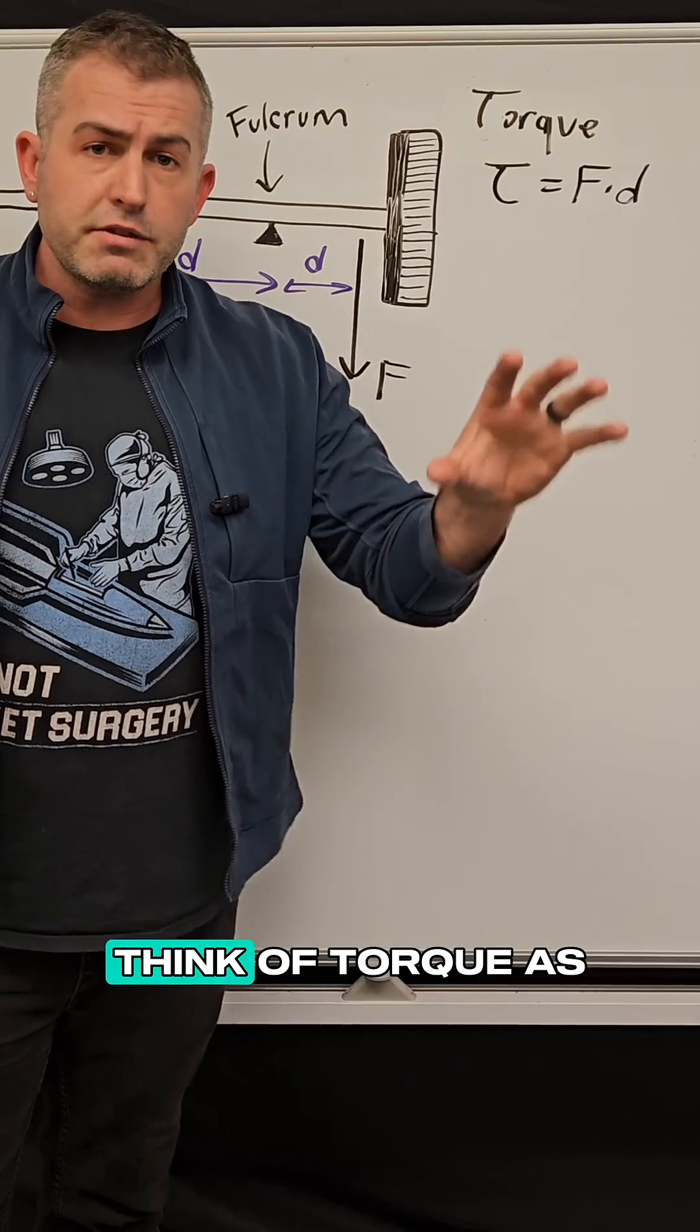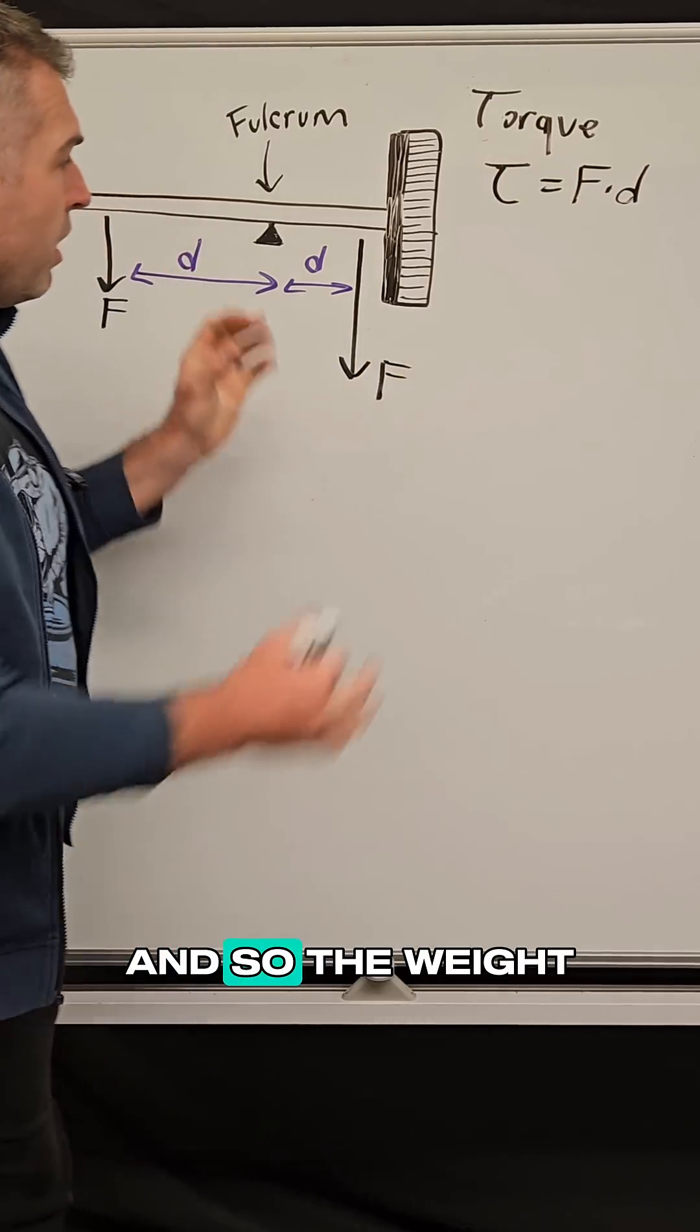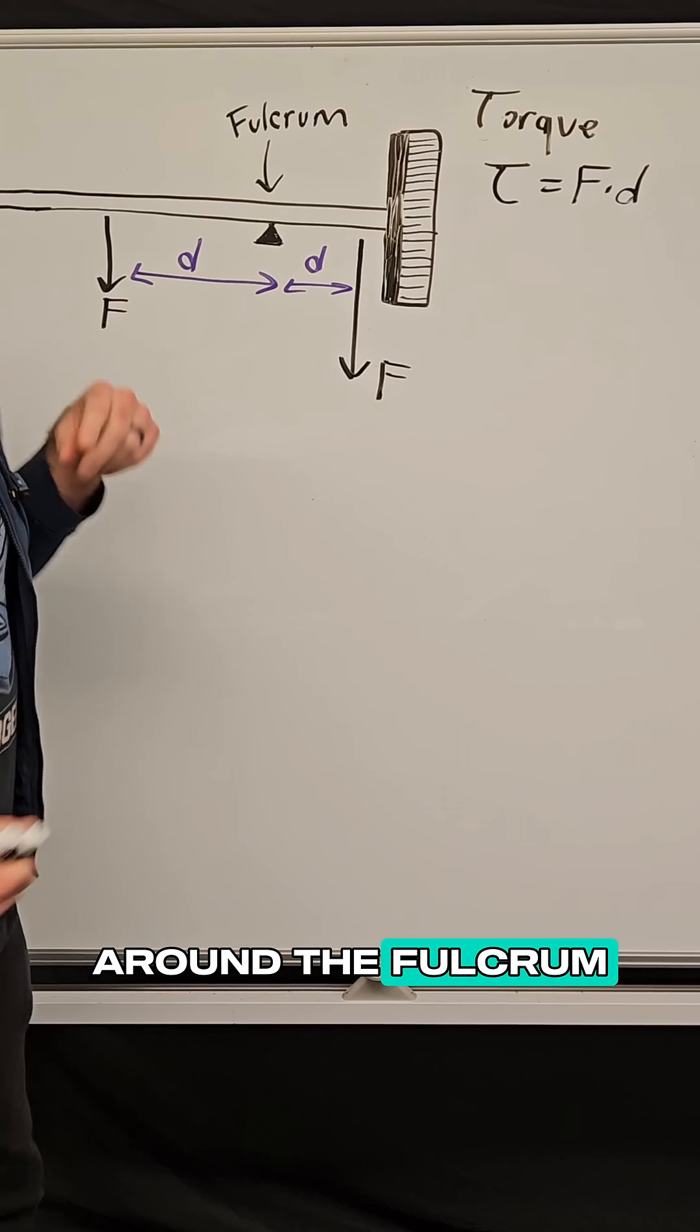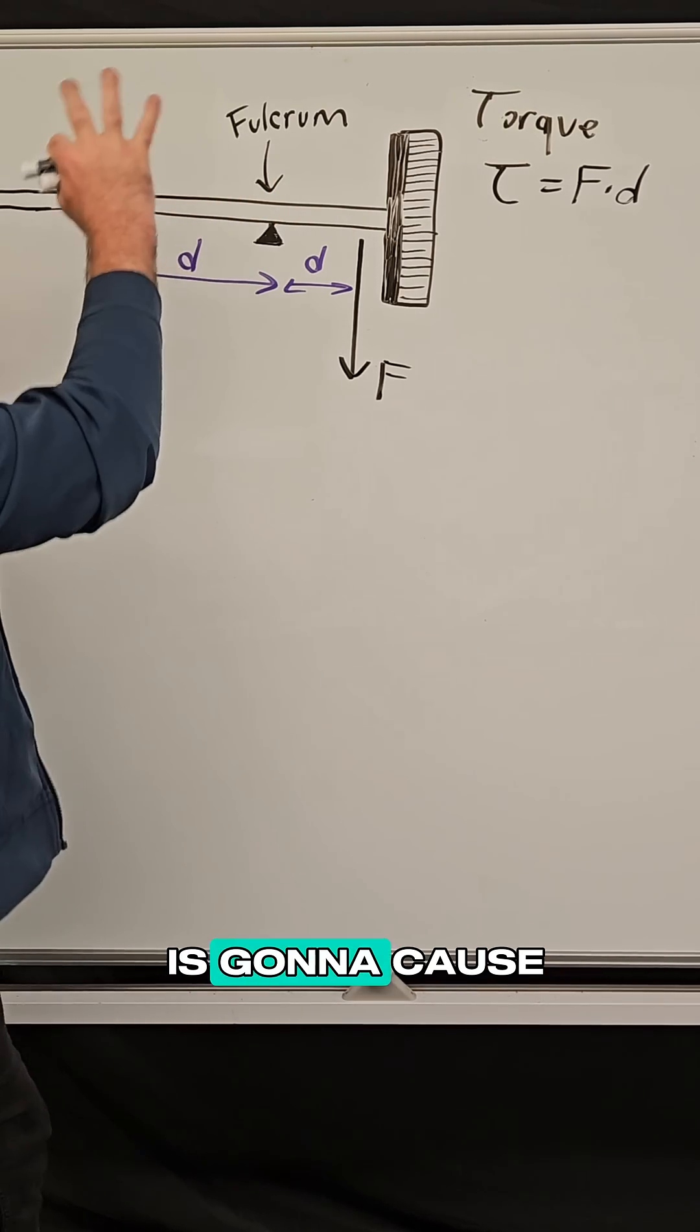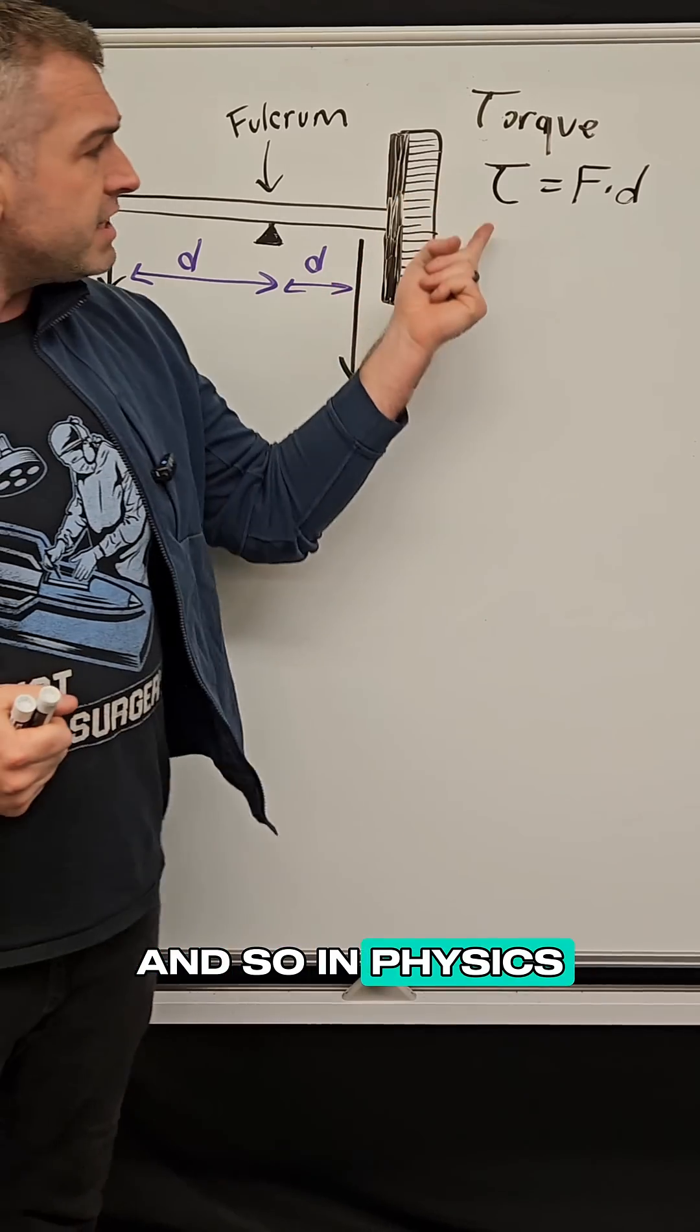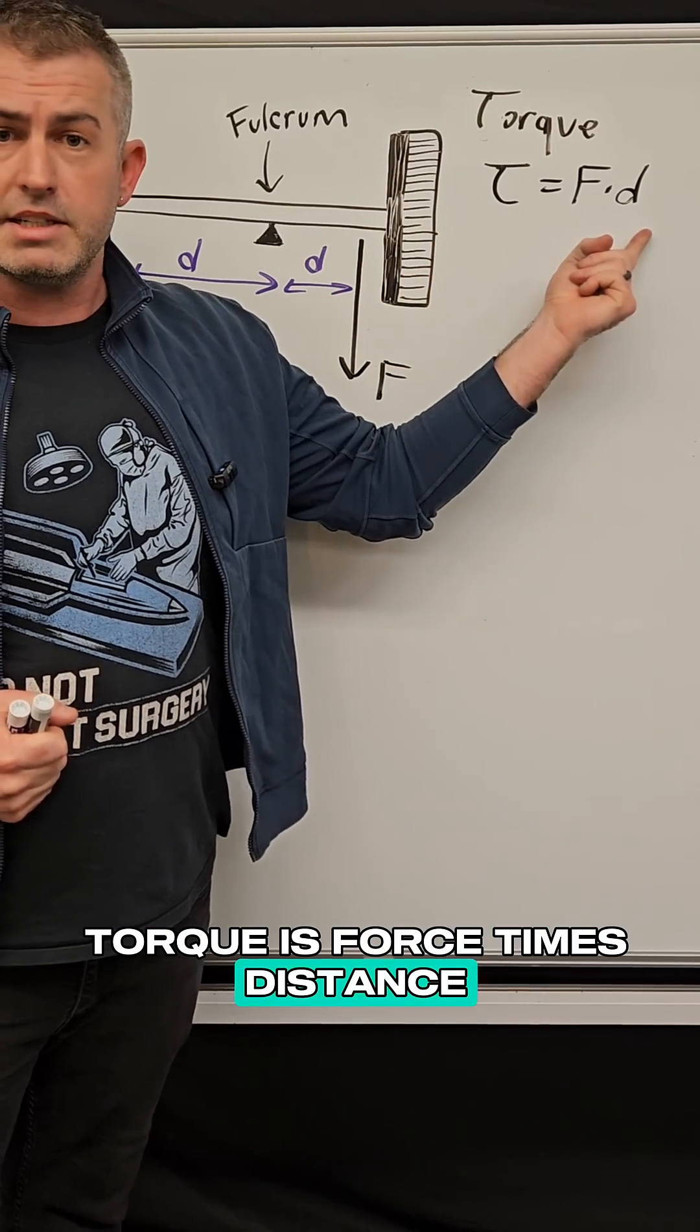So in physics, think of torque as a rotational force. And so the weight of this broom head is going to cause some kind of rotational force around the fulcrum. And the weight of this stick over here is going to cause another torque or rotational force. And so in physics, torque is force times distance.